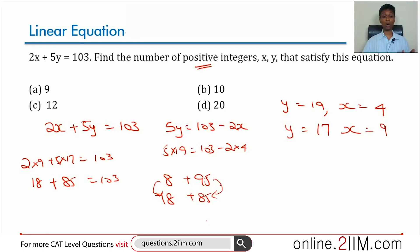This has to be offset by that. This is a multiple of 5, this difference will always be a multiple of 2. So effectively I step up 10, step down 10. The next value will be y equal to 15, x equal to 14, y equal to 13, x equal to 19 and so on.